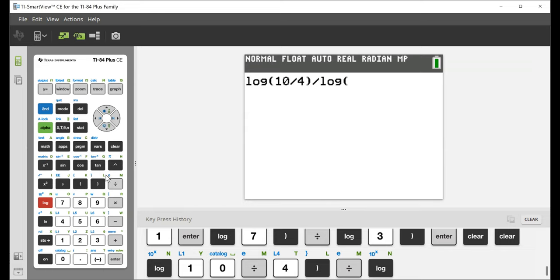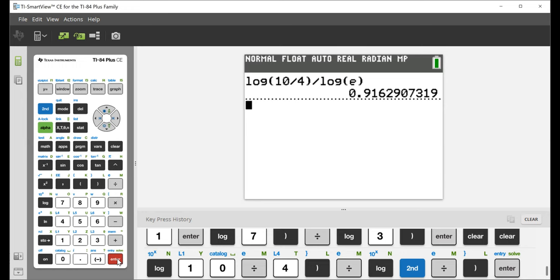and now e by itself is sitting in this little blue thing above the division symbol. So we press the second button, and then that, and we've solved for x, 0.916291.